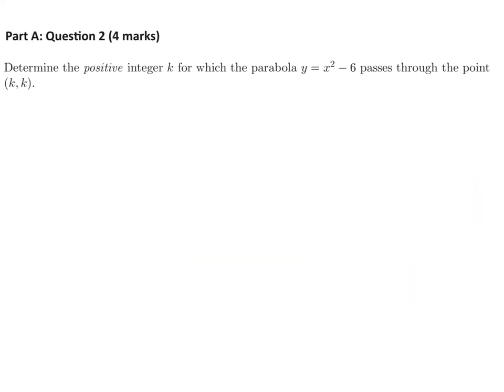Determine the positive integer k for which the parabola y equals x squared minus 6 passes through the point (k, k). So I guess we just have to substitute (k, k) into the equation. So it would be k equals k squared minus 6. Put everything on one side: k squared minus k minus 6.